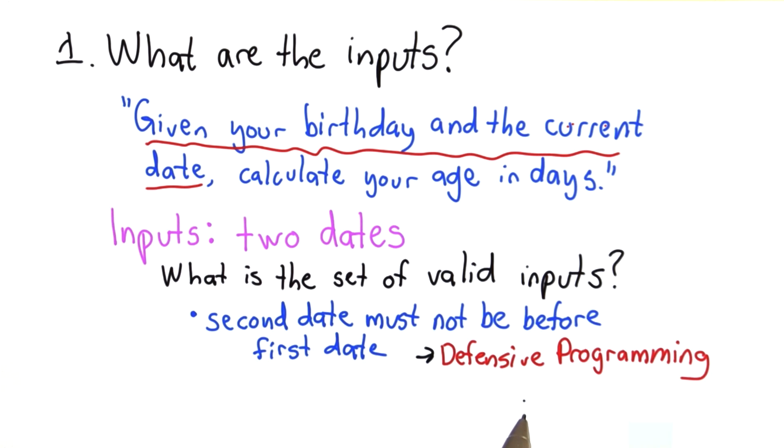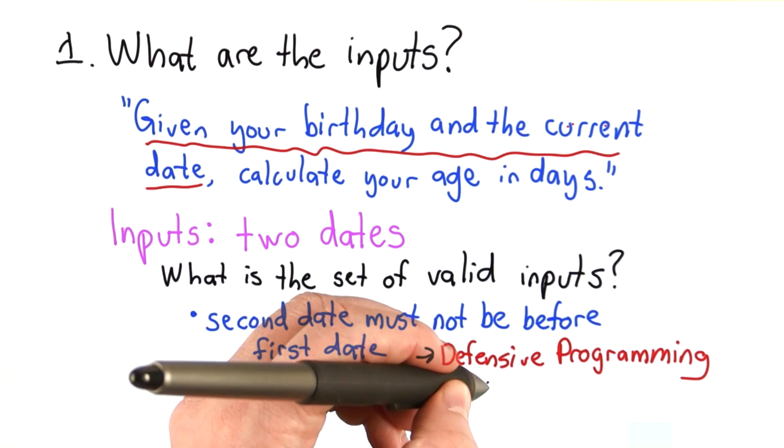And if we're being good defensive programmers, we should check this is true. It's an assumption. It's up to the user of our code to satisfy this, because we've said, well that's a requirement. To use our solution, you have to make sure the second date is not before the first date. But if we're going to be smart, we're going to program in a more defensive way, because sometimes other people might make mistakes, or we might make mistakes, and we're actually going to check this in our code.